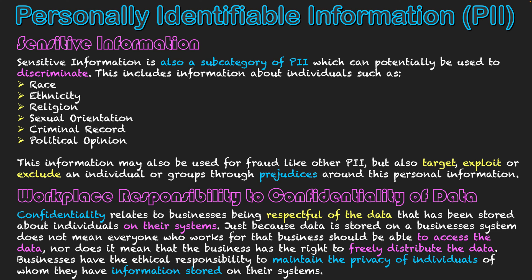Personally Identifiable Information — PII — encompasses all the different characteristics that can be linked to an individual, and once found out, can be used to commit fraud or cybercrime. There are many different categories of it, one of those being sensitive information, which can also be used to put prejudice on individuals. Workplaces have an expectation of confidentiality to protect the data they have stored about individuals — not just from external viewers, but also within their own organization — keeping that data secure, safe, and private.